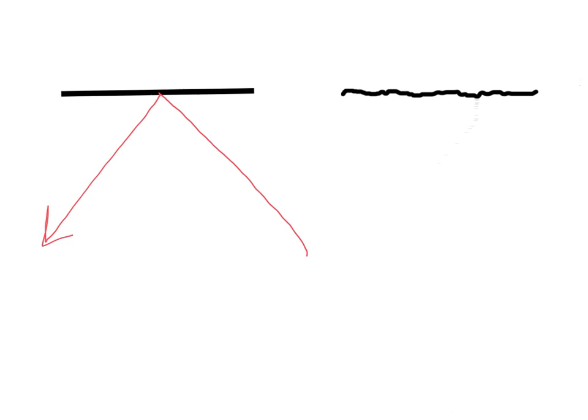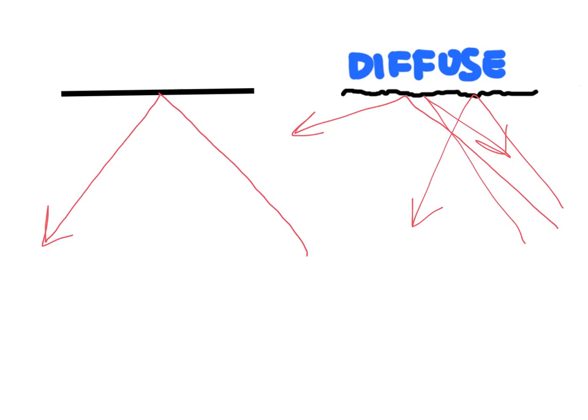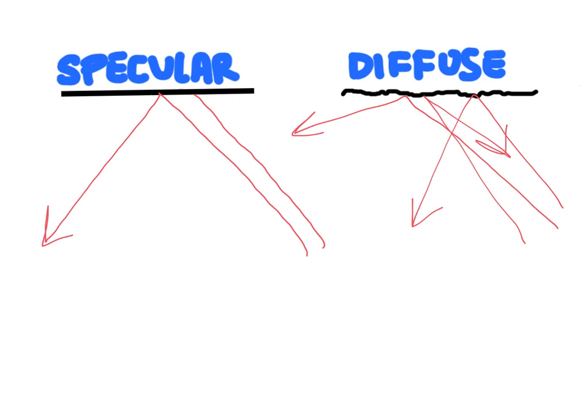When light hits bumpy surfaces, we get light bouncing off at all different kinds of angles, and we call this diffuse reflection. We're not really going to study this any further — we just recognize that it exists, and most of the time this is the type of reflection we have bouncing off objects. On the other side, we have specular reflection, which only works with nice flat mirrors, and that's the one we're going to study.